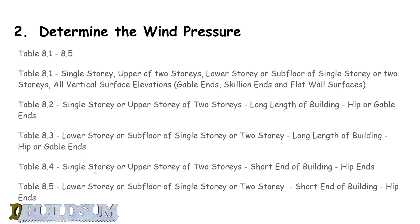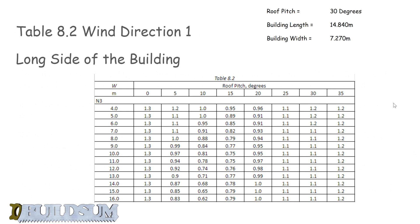Table 8.4 is for a single storey or upper storey of a two-storey building — short end of the building — so this is going to apply to us. Table 8.5 is again for the short end of the building on the lower storey of a two-storey house. You have to make sure you pick the right table for the building you're working on. We're going to use 8.2 for our long side and 8.4 for our short side.